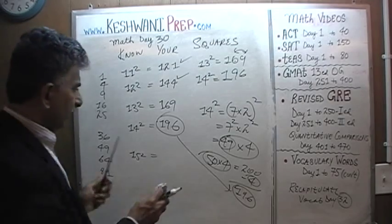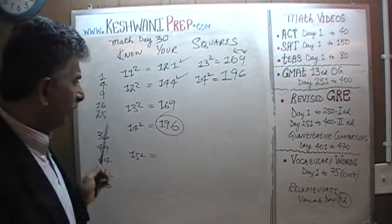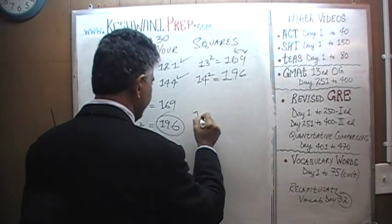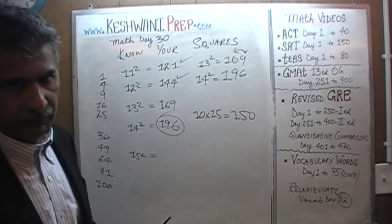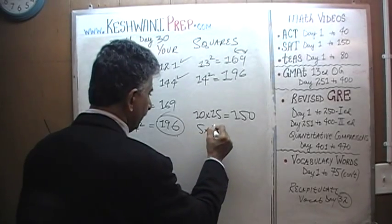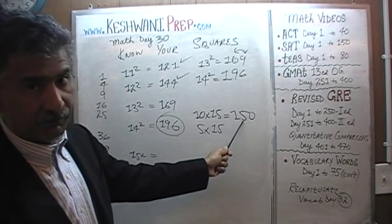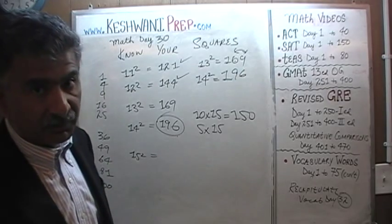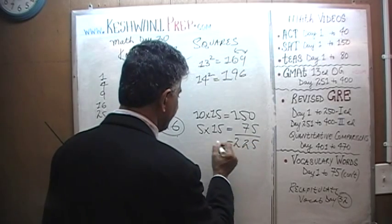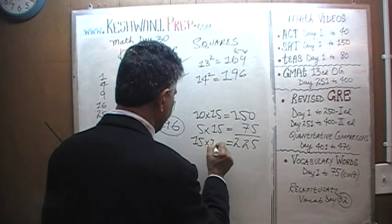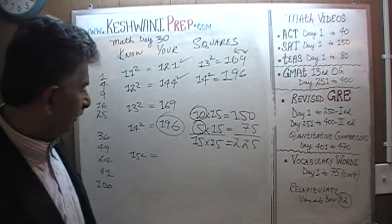What about 15 squared? 15 squared is very straightforward. We know 10 fifteens are 150. Therefore 5 fifteens would be half of 150, which is 75. Add them up: 150 plus 75 gives 225. That represents 15 fifteens, so 15 squared is 225.